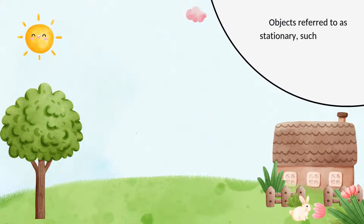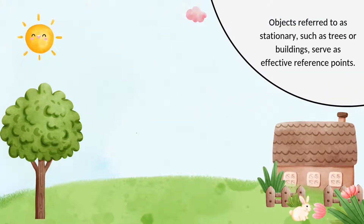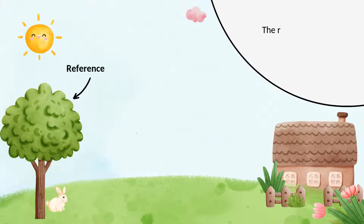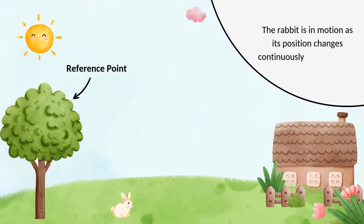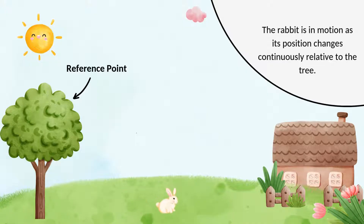Objects that are considered stationary — like trees, buildings, or even mountains — serve as effective reference points because they don't move relative to the Earth's surface. In our scene, the tree acts as our reference point. As the rabbit hops, its position changes continuously relative to the tree. Because the rabbit's location is shifting relative to this stationary object, we can tell that it's in motion.